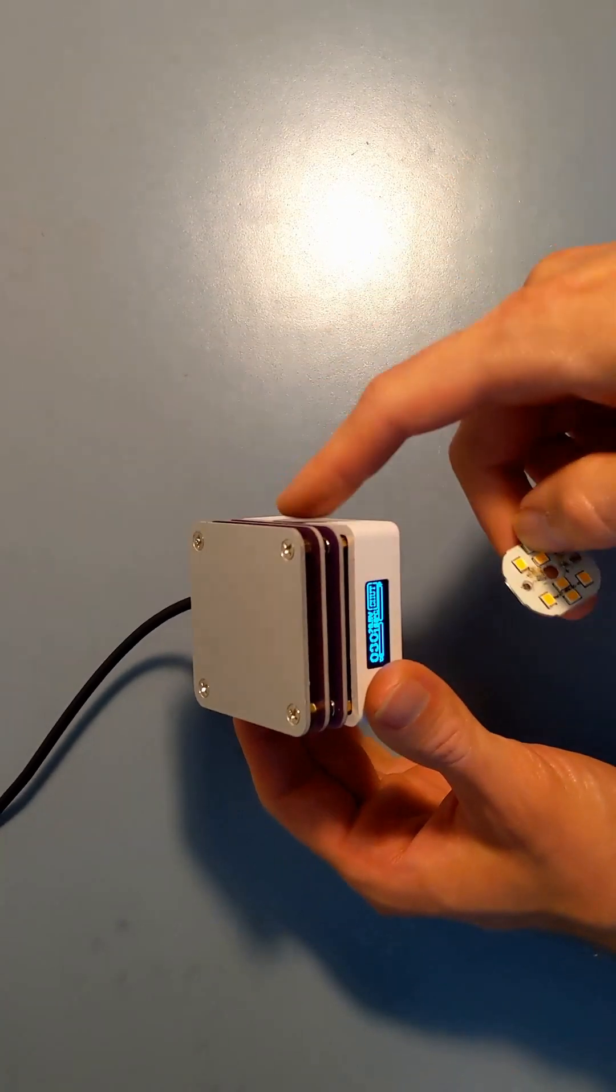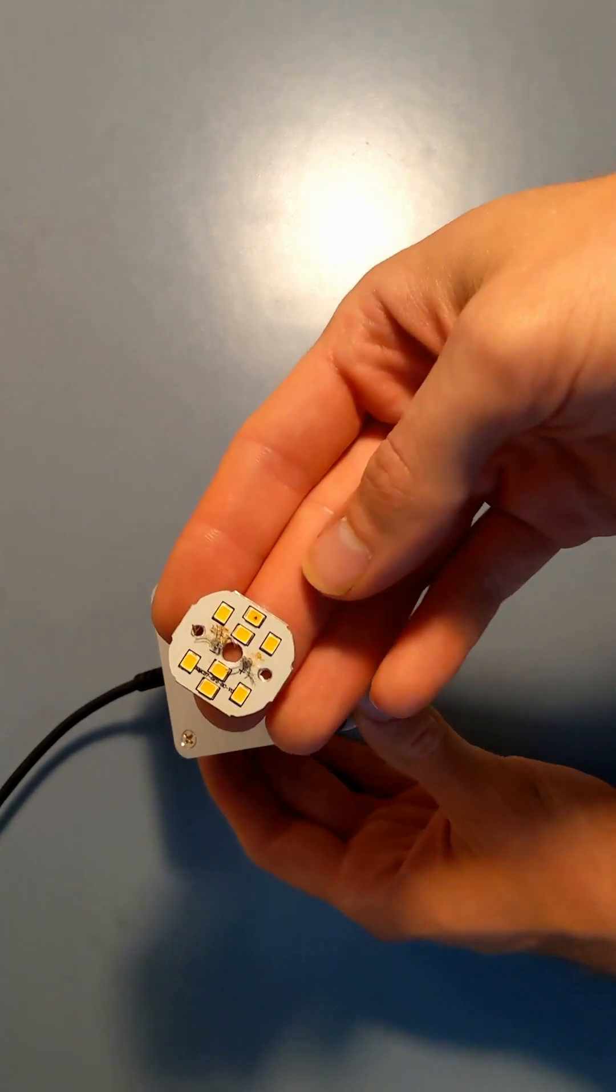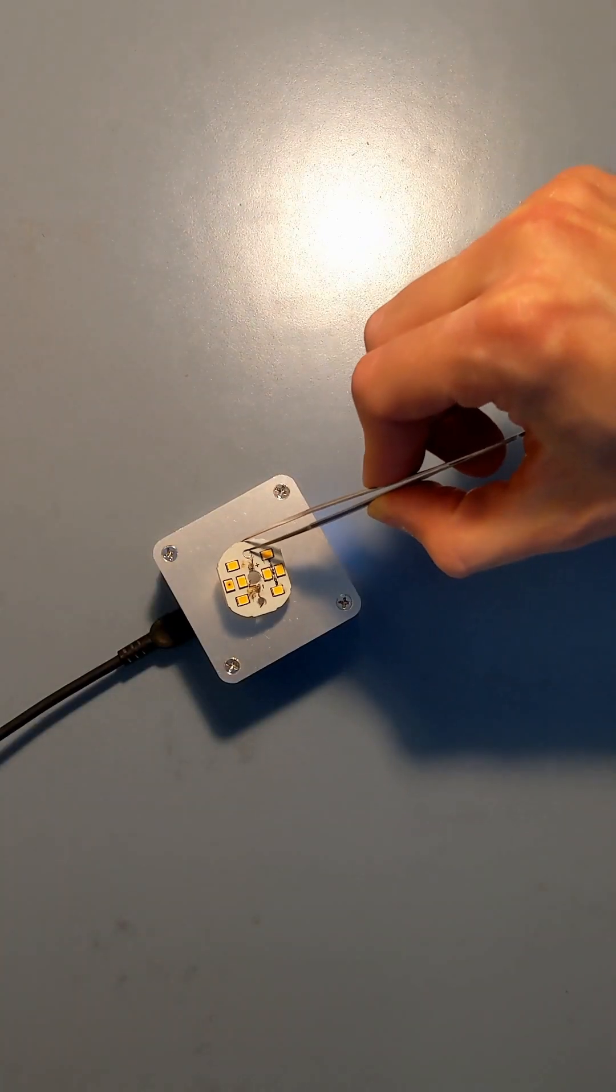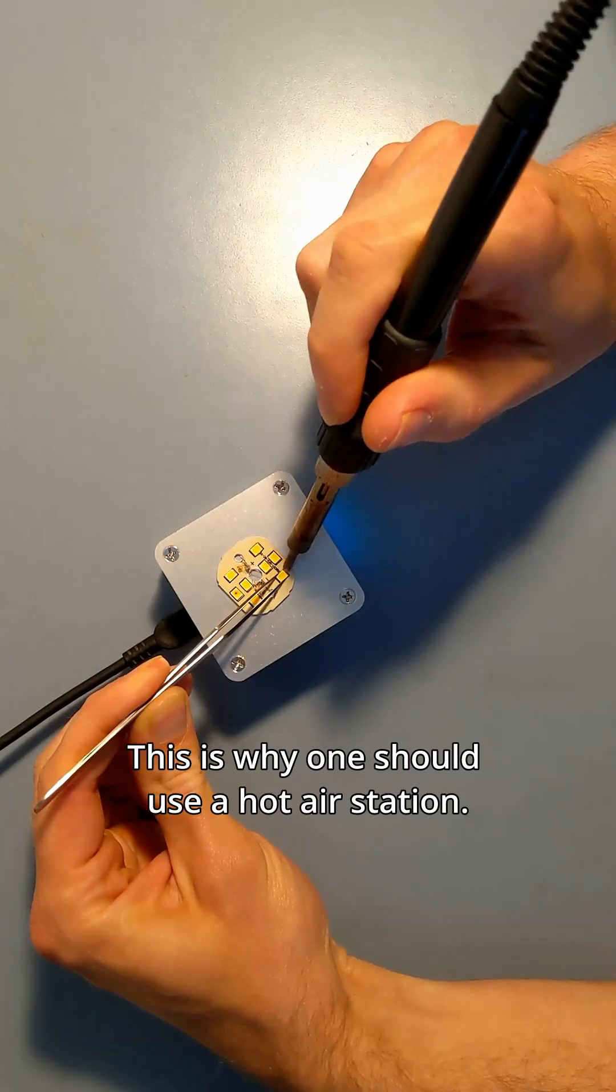We start by preheating this tiny hot plate to desolder a couple of the intact LED chips from the broken bulb's PCB. I never really do SMD soldering, so this is going to be disastrous.